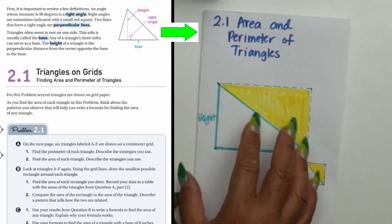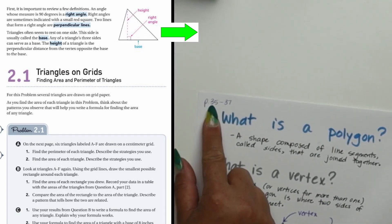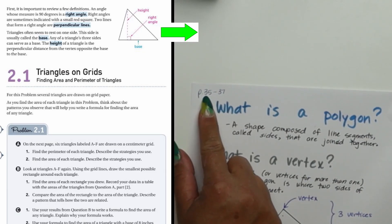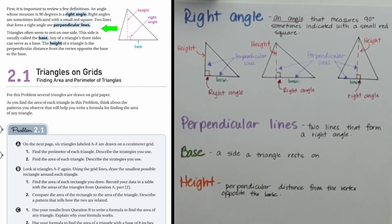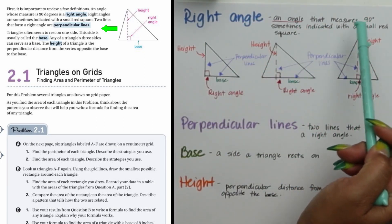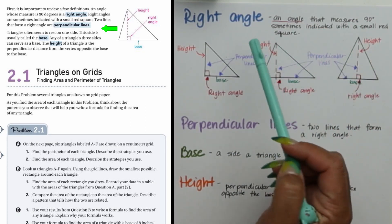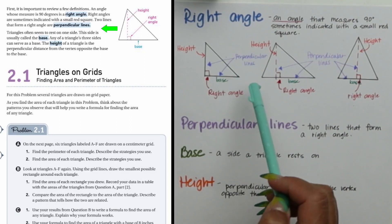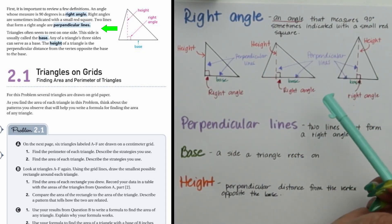We're going to focus on triangles now. This is on pages 35 to 37 of section 2.1 in 'Covering and Surroundings' in your textbook. You do not have to copy this down. We're looking at four characteristics of a triangle. The first is a right angle, which measures 90 degrees and is sometimes indicated with a small red square.